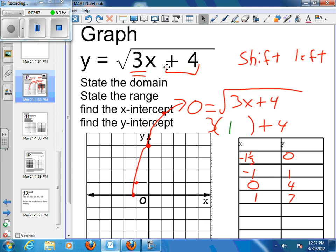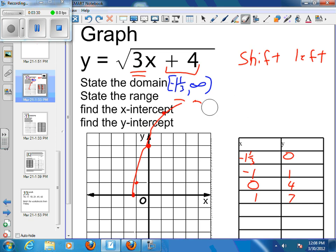If we wanted to go back and state the domain, the domain is all the x's we can be. You can see that our x's will never go any lower than negative 1 and 1 third, but they will go on forever in the positive direction. So our domain would be starting at negative 1 and 1 third and going to infinity. The range is never going to go below 0. We're never going to get below the x-axis because we have no shift going up and down. So our range would start at 0 and go to positive infinity.